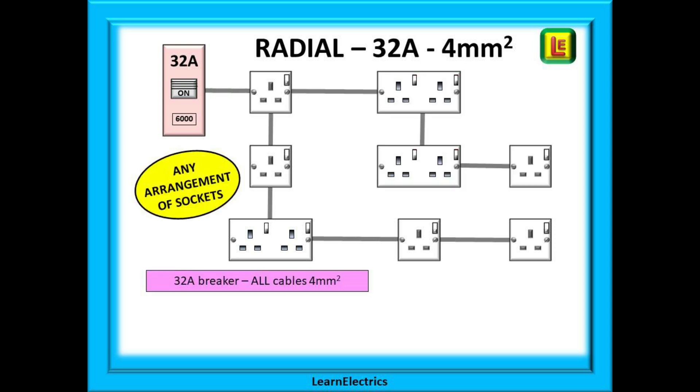And we can start a new daisy chain if we want to. We can have any arrangement of sockets that we wish. The only proviso is that for a 32 amp breaker all the cabling should be at least 4 mm cross sectional area.